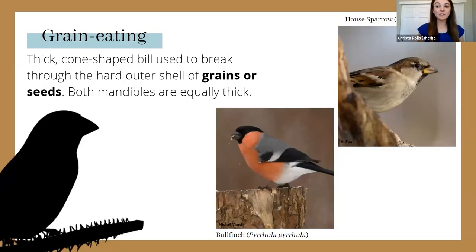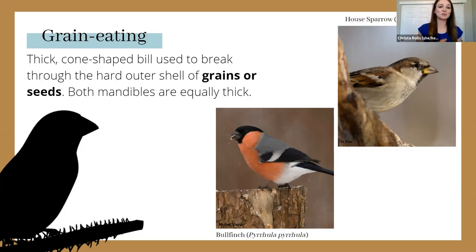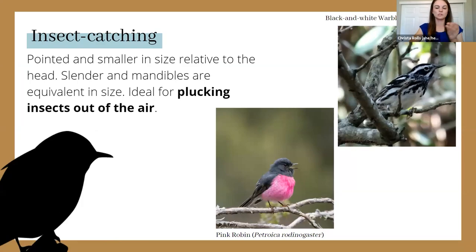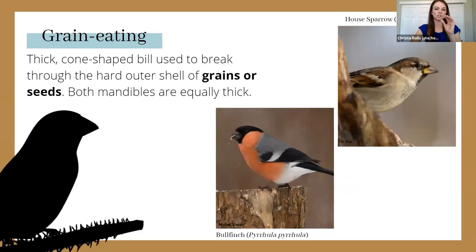Grain-eating bills are thick and conical in shape — like we see on sparrows and also on grosbeaks, which have large thick bills for breaking through seeds, grains, or nuts. You can clearly see the difference in thickness compared to the insect-eating tweezer-like bill: the grain-eating bill is built to break open the outer shell of seeds rather than pluck insects.